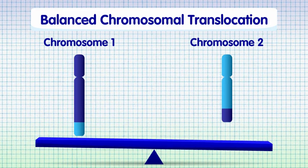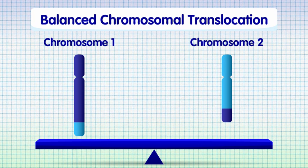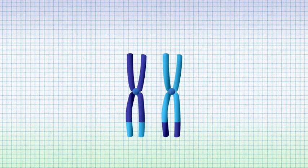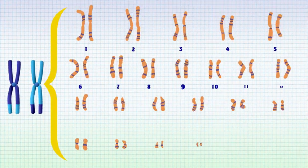This is known as a balanced chromosomal translocation because no chromosomal material has been lost or gained. Reciprocal translocations can occur between any two chromosomes.